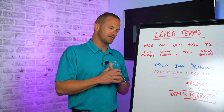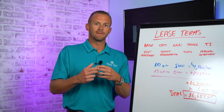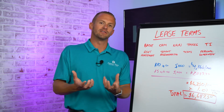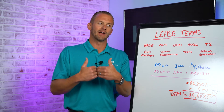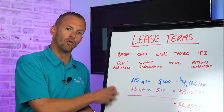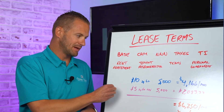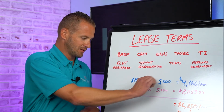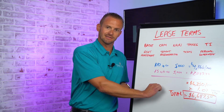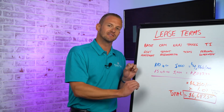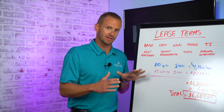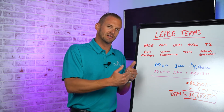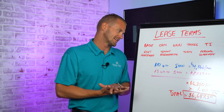You might also be able to get a rent abatement. If you're a new startup business that needs time to get licensed, you could ask for a rent abatement for a certain period. That might be a full rent abatement, or it might be a partial abatement where you don't pay the base rent but you still have to pay the CAM, triple net, and taxes. So it might be an adjusted rent abatement — not a full one — where only the base rent itself is waived.